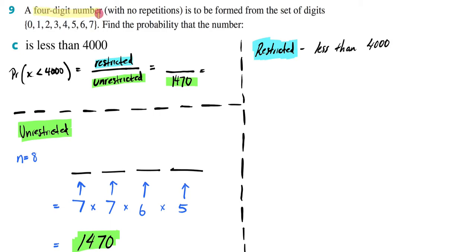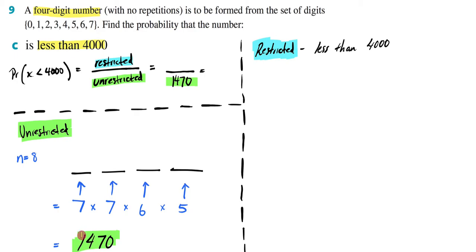So we have a four-digit number with no repetitions, to be formed from the set of digits 0 to 7, and we need to find the probability that the number is less than 4,000 for part C. We're trying to find the probability that we have a number less than 4,000. We're going to use restricted over unrestricted — the unrestricted being all the different four-digit numbers we can make from 0 to 7, which we know is 1470.